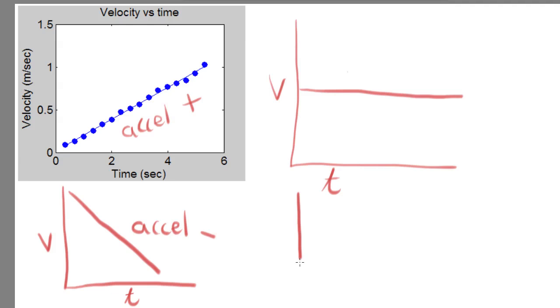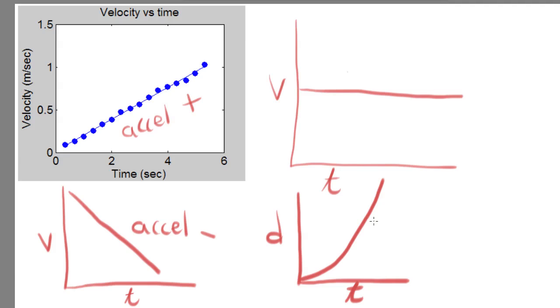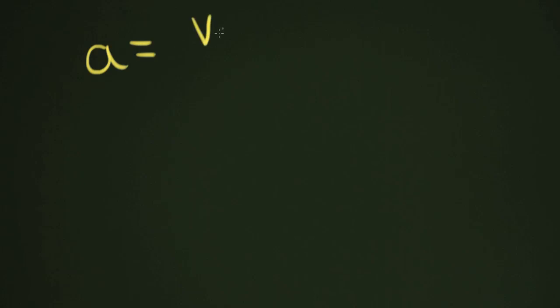On a distance-time graph, to show acceleration you would need a changing slope — a parabolic, increasing slope — to show that the distance is increasing exponentially, demonstrating that velocity is increasing and therefore showing acceleration. Graphing can really show all types of motion. Now let's write down the acceleration equation once more: acceleration equals final velocity minus initial velocity all over time. Let's see how we would use that in a sample problem.